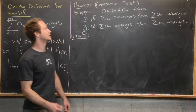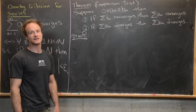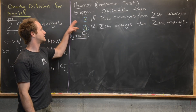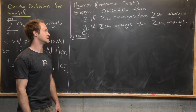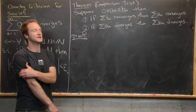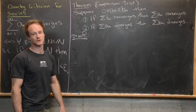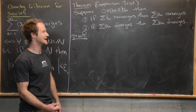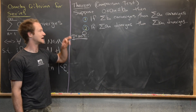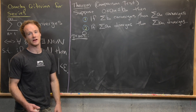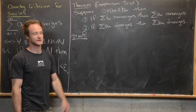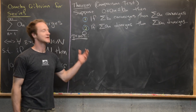The first thing we're going to do is prove the comparison test. Our setup is that we have two sequences of non-negative real numbers: 0 ≤ a_n ≤ b_n. We have two statements which are contrapositives of each other, so proving one gives the other for free. We'll prove that if the series of b_n converges then the series of a_n converges, and the contrapositive says that if the series of a_n diverges then the series of b_n also diverges.